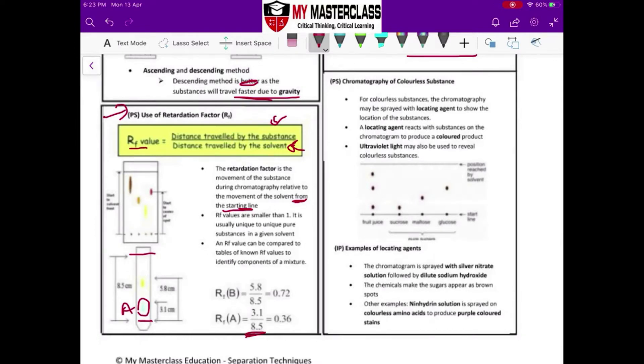Distance moved by the solute, which is over here, 3.1 over distance moved by the solvent, which runs all the way to the top from the starting line. So my RF value is 0.36.